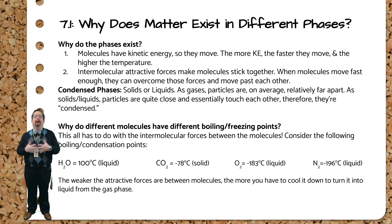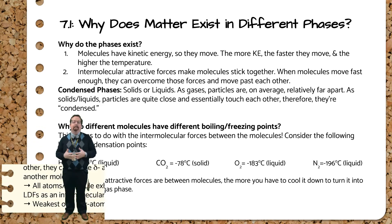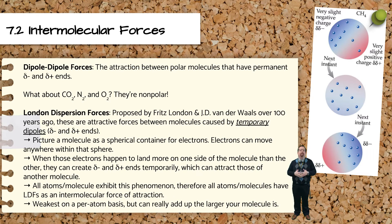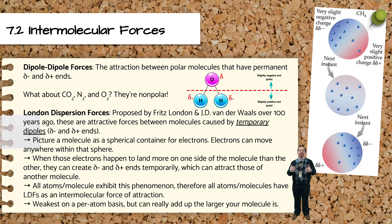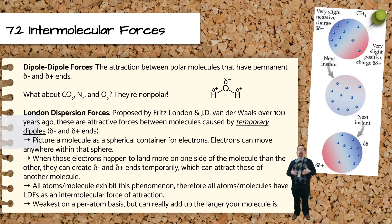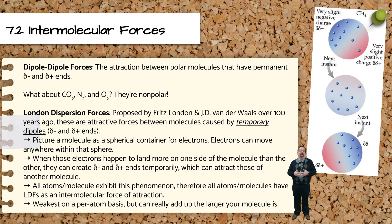The weaker the attraction between molecules, the colder, or slower, those particles have to move in order for those attractions to be felt. We know about the dipole-dipole forces between water molecules — water, being polar, has permanent dipoles, or partially negative and positive ends. These partial charges allow one water molecule to be attracted to another, because opposite charges attract. But what about our non-polar carbon dioxide, oxygen, and nitrogen molecules? What makes them stick together if they don't have partial charges? The answer is the ever-popular London dispersion forces.